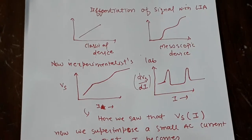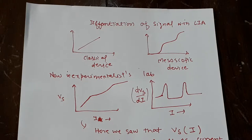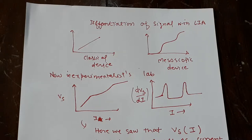So in this video, I am going to talk about the differentiation of signal with the lock-in amplifier. In the condensed matter experimentalist lab, you normally see people do differential conductance measurement, especially in cryogenics lab or device labs.